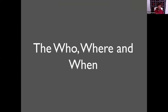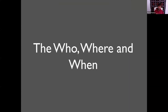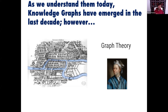Now let me tackle who, where, and when together. As we understand them today, knowledge graphs really emerged with the Google Knowledge Graph about nine to ten years ago — very modern and recent. But graphs themselves are not new. In math, computer science, AI, and social science, graphs have been around for a long time. Hundreds of years ago, the mathematician Euler invented graph theory to solve the Königsberg bridge problem.